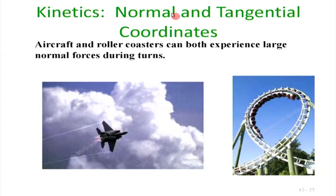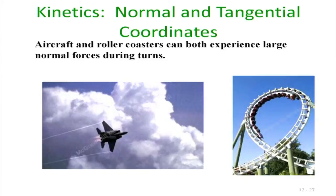Now let us move to kinetics using normal and tangential coordinates. When a particle does not travel in a straight line, or the geometry is suited to normal and tangential coordinates, we can use those. Newton's law F̄ = mā does not change — it is always valid regardless of coordinate system.